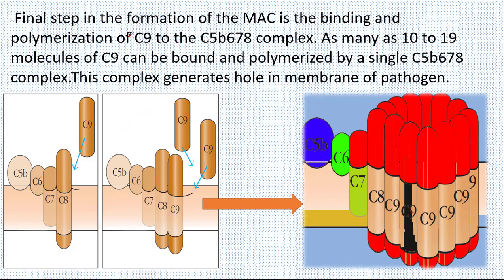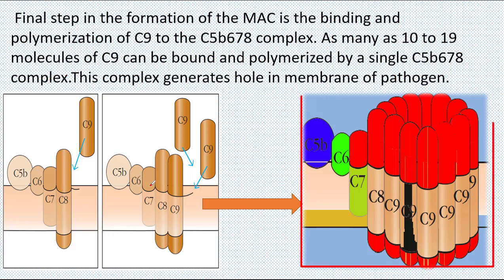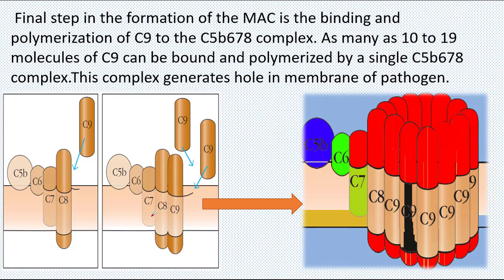As many as 10 to 19 molecules of C9 can be bound and polymerized by a single C5b-C6-C7-C8 complex. This complete C5b-C6-C7-C8 complex with multiple copies of C9 has full lytic potential and generates holes that are 100 angstroms in diameter in the membrane of the pathogen.